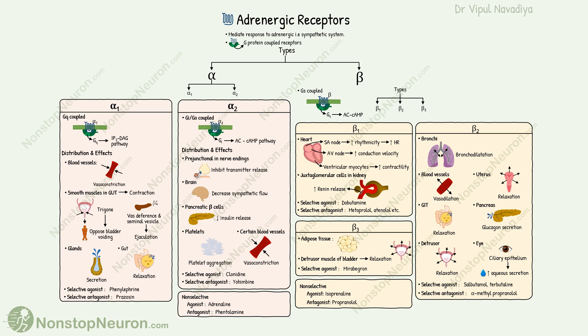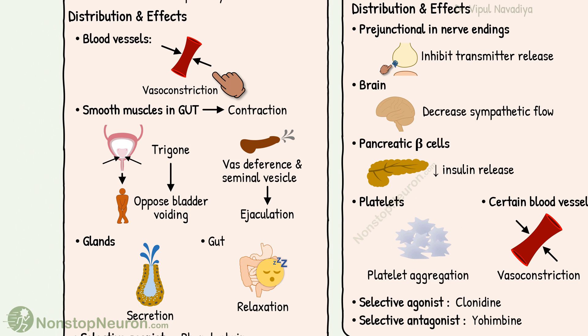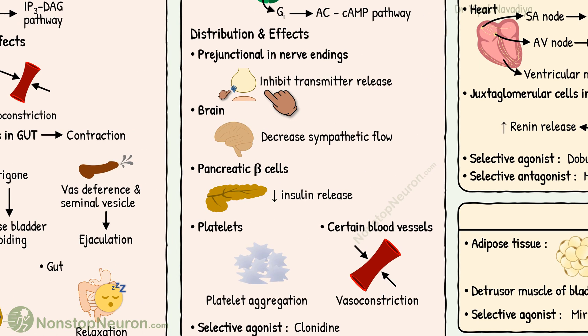That's all about adrenergic receptors. Now let's have a quick summary. Adrenergic receptors are G-protein-coupled receptors, broadly divided into alpha- and beta-adrenergic receptors. Alpha-1 receptors are involved in vasoconstriction, contraction of smooth muscles in the genitourinary tract, glandular secretion, and gut relaxation. Alpha-2 receptors are involved in inhibition of neurotransmitter release from nerve endings, decrease in sympathetic outflow, inhibition of insulin release, platelet aggregation, and vasoconstriction.